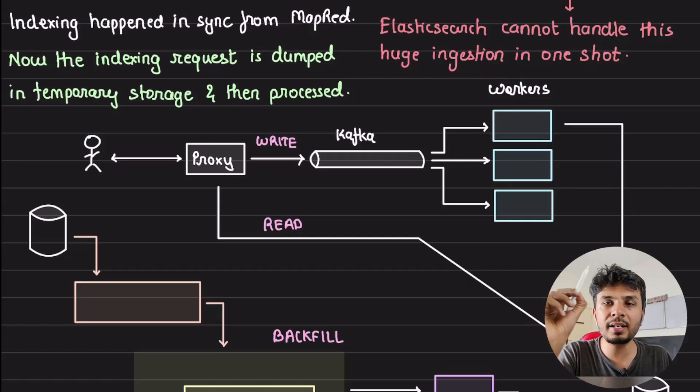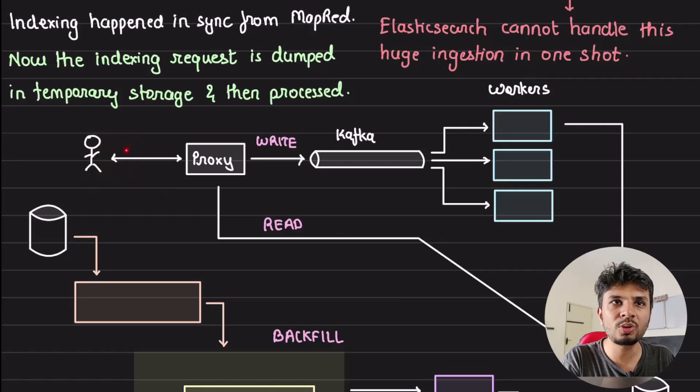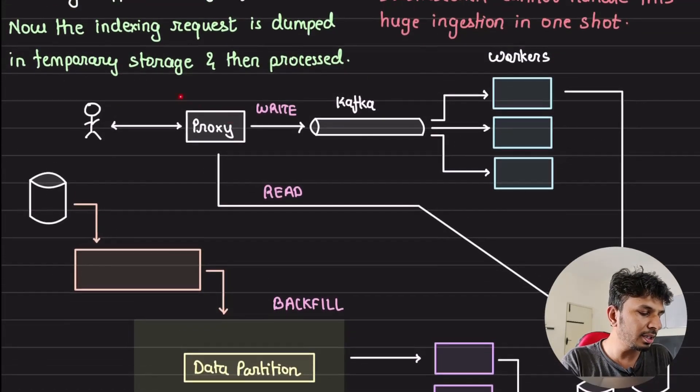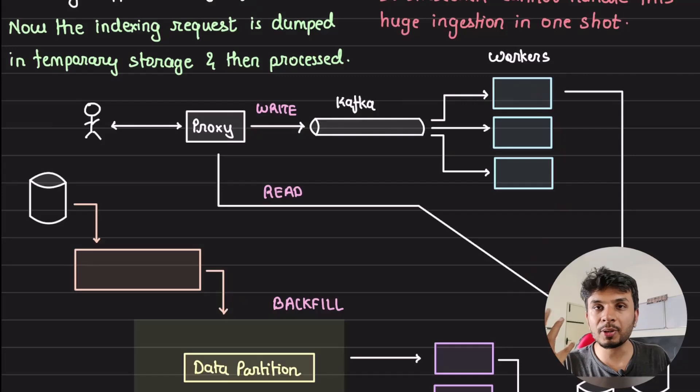Now there is a write that is happening in real time. For example a new tweet is created, you want to ingest this tweet in real time into Elasticsearch. Now some API server, let's say this is API server, is making a call to Elasticsearch. But what it is doing is it is not directly making call to Elasticsearch because it's not allowed to do so. It is making a call to the HTTP proxy. HTTP proxy instead of directly writing to Elasticsearch, it puts an event into Kafka. From this Kafka workers consume and it puts it into Elasticsearch. This way real-time ingestion happens in a staggered way protecting the Elasticsearch cluster.